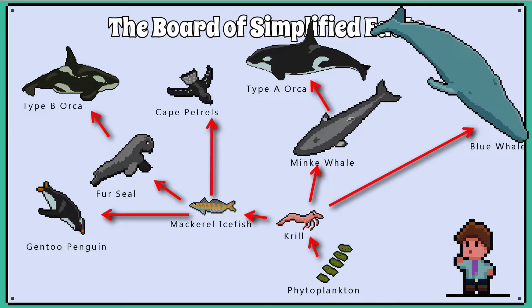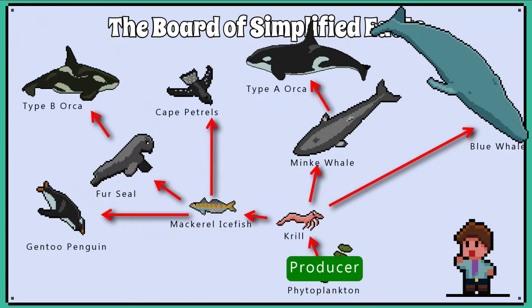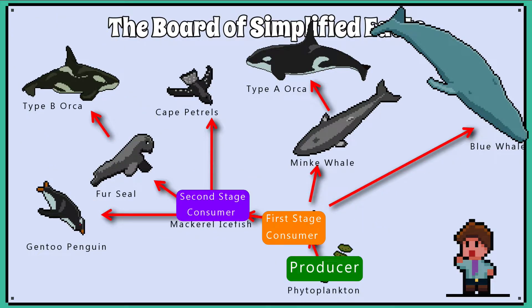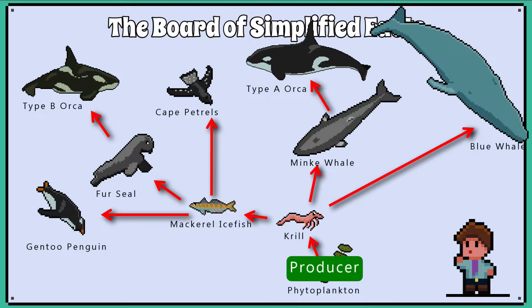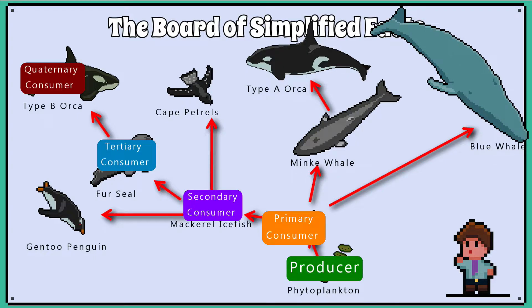Here are some examples of food webs, which are very similar to food chains, but they can also show how more than one organism may rely on a food source. They can be labelled exactly the same way — you just count how many organisms are in one chain within the web. You have the producer, first stage consumer, second stage consumer, third stage consumer, and fourth stage consumer. Or we can use the terms producer, primary consumer, secondary consumer, tertiary consumer, and quaternary consumer.